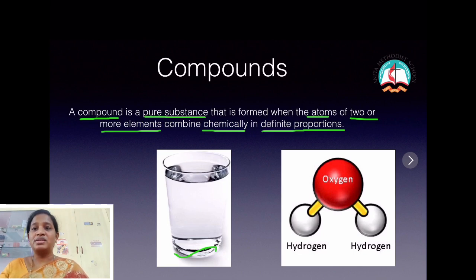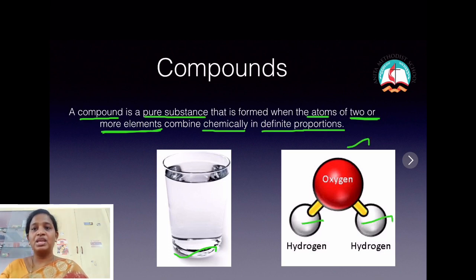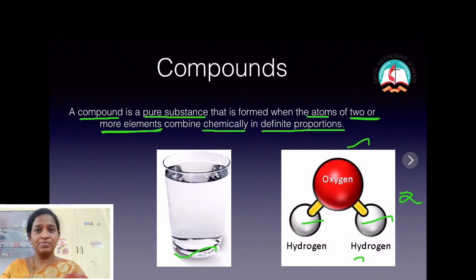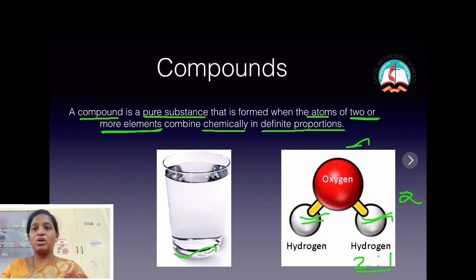Let's take water as an example. Water is a compound made up of two elements, namely hydrogen and oxygen. These two elements combine chemically in a ratio of two is to one, which means two atoms of hydrogen and one atom of oxygen, and they combine together to form a compound called water.